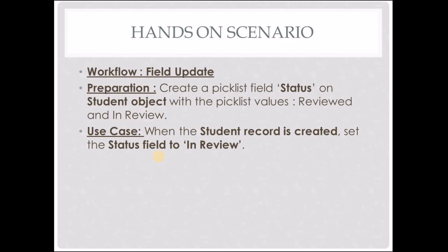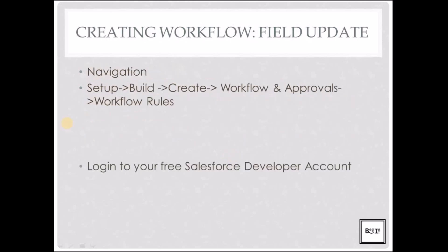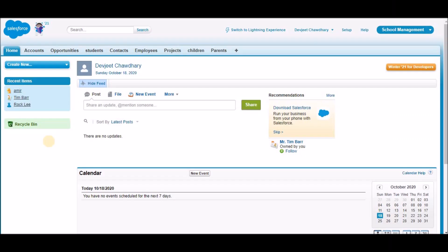Now that we know what a workflow field update does, let's get on to the hands-on scenario. We are going to create a workflow field update. First, the preparation: we need to create a picklist field called status on the student object with picklist values 'reviewed' and 'in review'. The use case is: when the student record is created, set the status field to 'in review'. I'm currently logged into my Salesforce free developer account and we'll begin with the preparation.